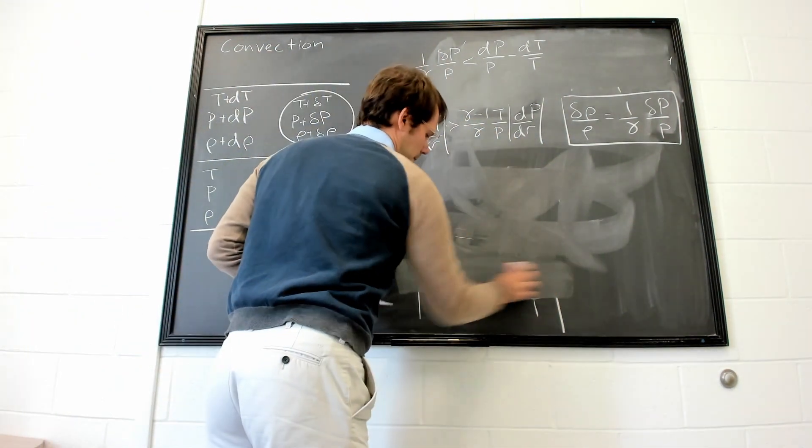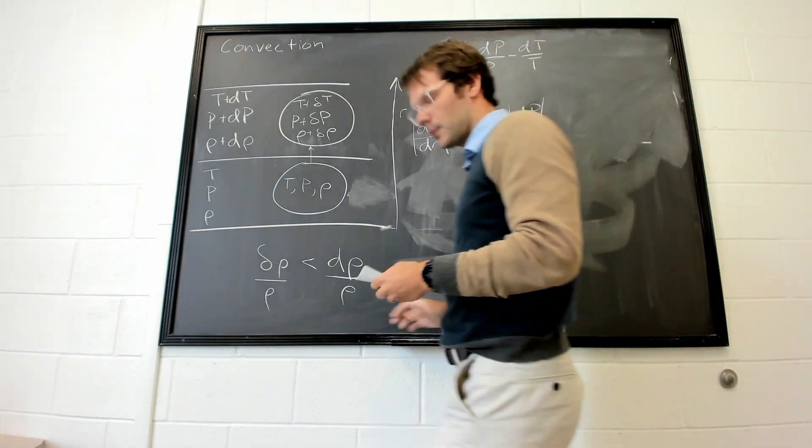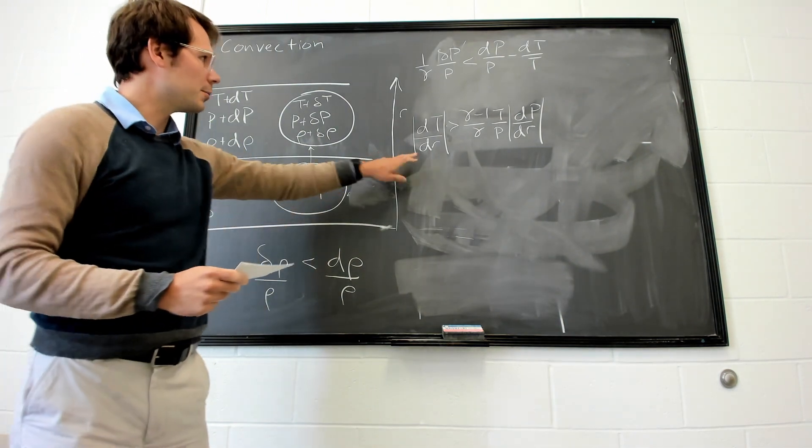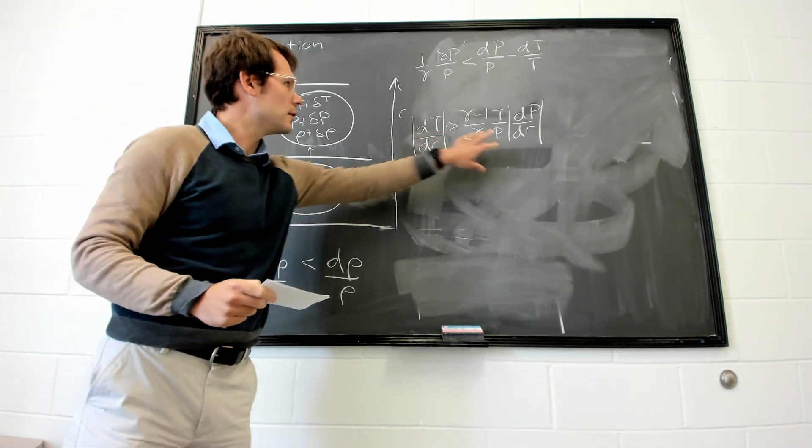And then we have our condition for convection. This is called the adiabatic temperature gradient.